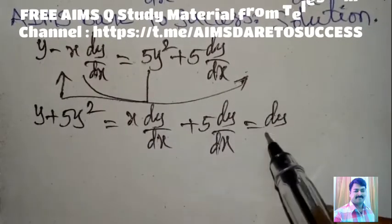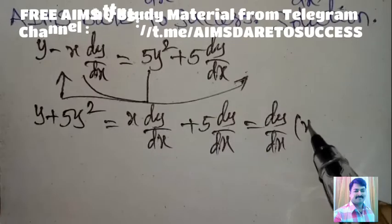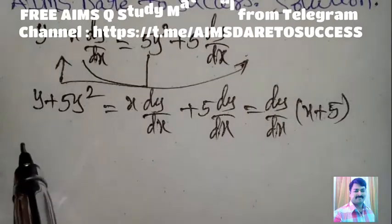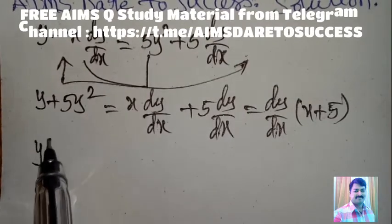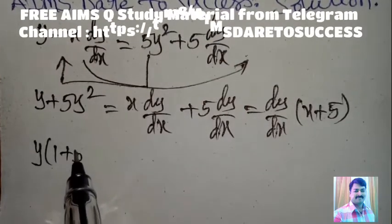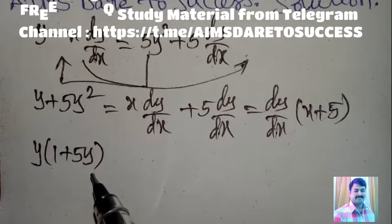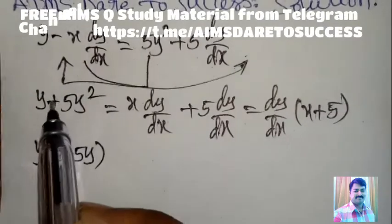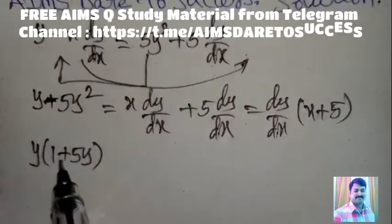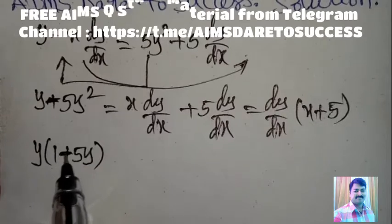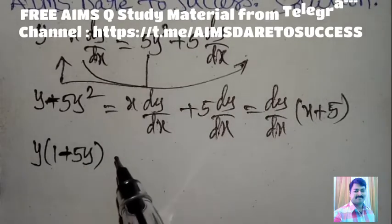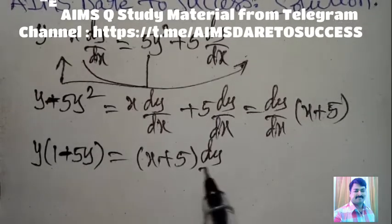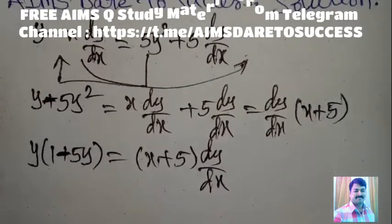Here dy/dx is common on the right side, giving (x + 5). On the left side, y is common, giving y(1 + 5y²). Wait — so we get y(1 − 5y) = (x + 5)(dy/dx).